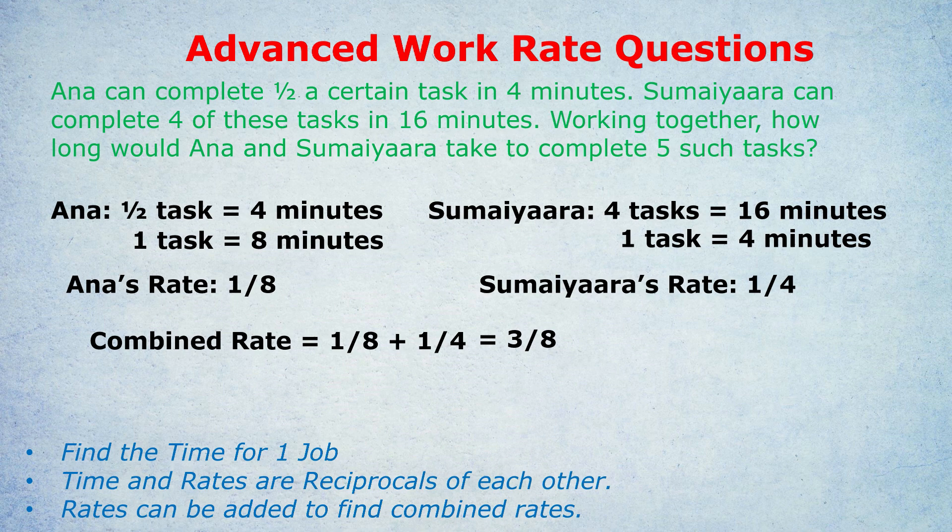Their combined rate is 3/8 — or three-eighths of a task per minute. Rates and times are reciprocals of one another, so the reciprocal of 3/8, which is 8/3, is their combined time. If their combined rate is 3/8, their combined time is 8/3 minutes to do one job together. That's two and two-thirds minutes, or about two minutes and 40 seconds — which makes sense since one person does it in four minutes and the other in eight minutes.